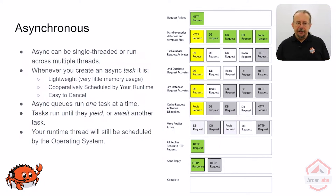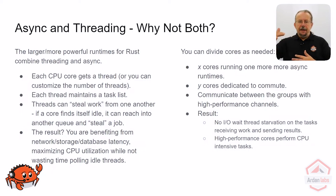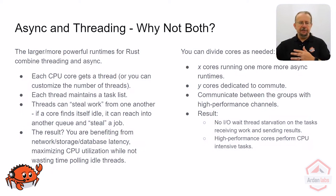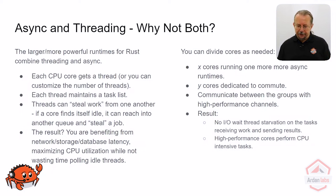If you're using one of the bigger runtimes like Tokio, it's running multiple queues and you could benefit from letting Tokio run multiple queues at once. If one CPU finds itself with nothing to do, it can still work — it can look and say, 'hey, that other CPU has a bunch of stuff that needs processing it hasn't got to yet.' Grab some of it, do it, and you end up with truly superb performance, which is why so many of the top performing web servers wind up being written in Rust.